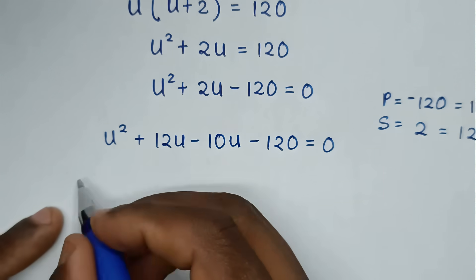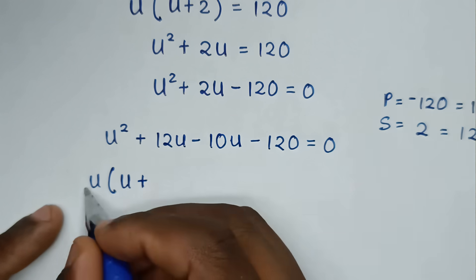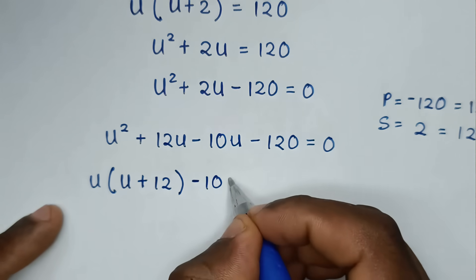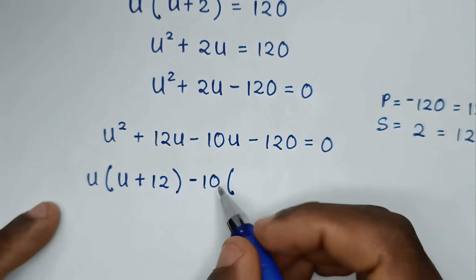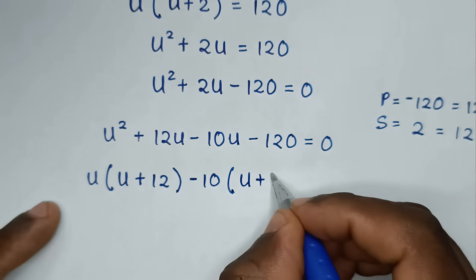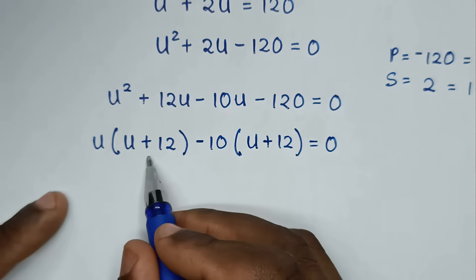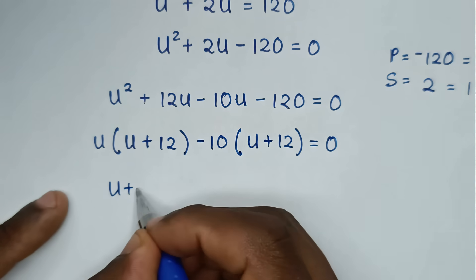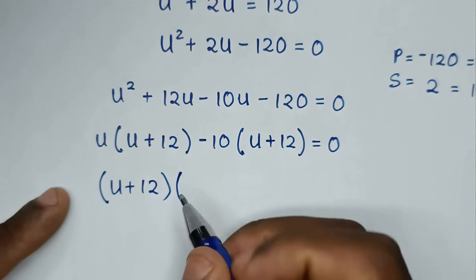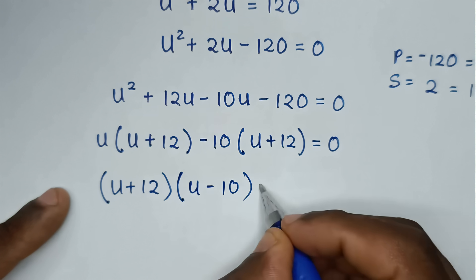Factoring by grouping: u is common in the first two terms, giving u(u + 12). Then -10 is common in the last two terms: -10(u + 12). So we have (u + 12)(u - 10) = 0.